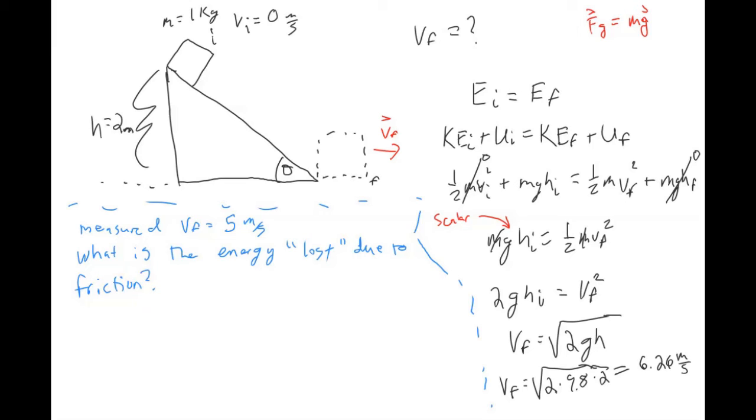And so I put lost in quotation marks because conservation of energy is still always true. So that energy didn't disappear. It just got converted into something that's not kinetic energy or potential energy. So if you, for example, rub your hands together really fast, you can feel the heat that that generates. And you can also hear your hands rubbing together. So that's heat energy and sound energy that's being generated. So that's the energy that's being converted. Right. So it's not lost. It's just not potential or kinetic energy anymore.